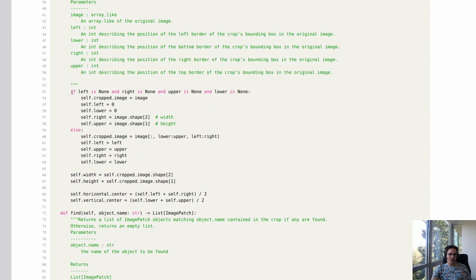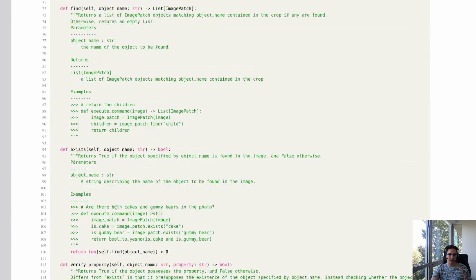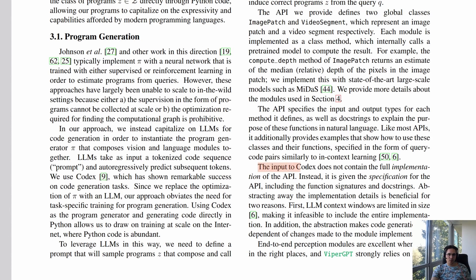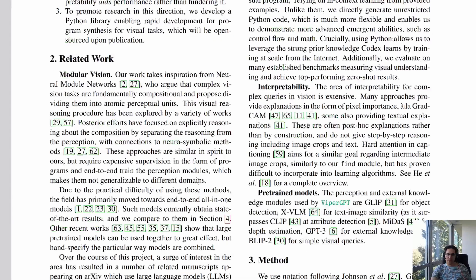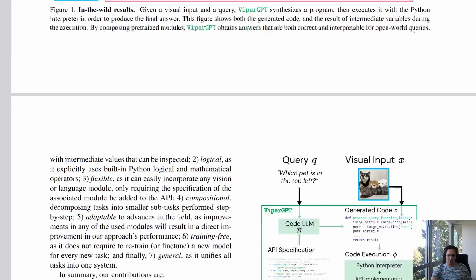They use Codex, and they mention that the input to Codex does not contain the full implementation of the API — instead it's given the specification for the API including the function signature and docstring. Abstracting away implementation details is beneficial for two reasons: first, large language model context windows are limited in size, making it infeasible to include the entire implementation; second, the abstraction makes code generation independent of changes made to the module implementation, so if we improve those modules we can use them without changing or retuning the prompt.